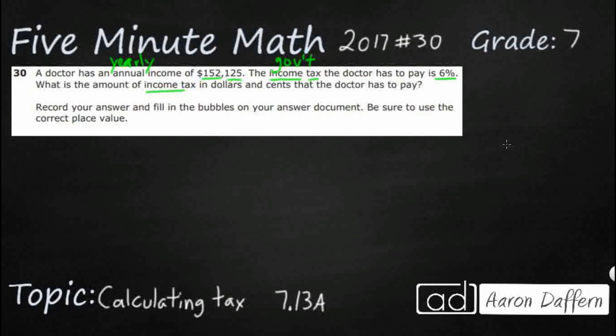Alright, so probably the easiest way to look at it would be to write it out like this. We need to find 6% of our $152,125. So it's going to be a much smaller amount.